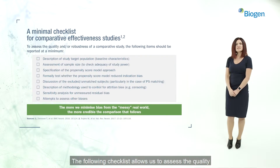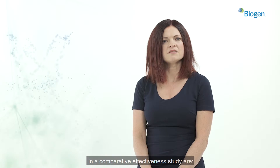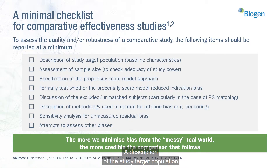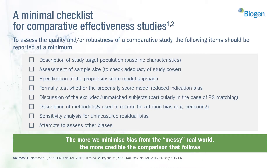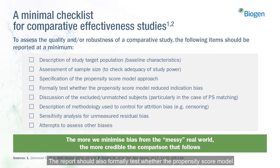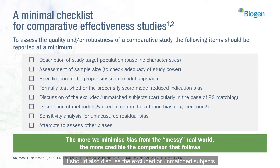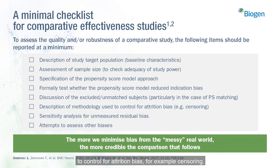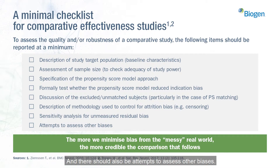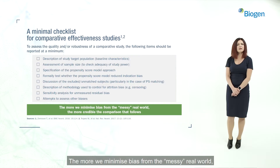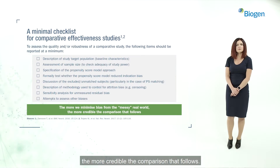The following checklist allows us to assess the quality and robustness of a comparative study. Important topics that should be reported include: a description of the study target population and their baseline characteristics; an assessment of sample size to check adequacy of study powering; specification of the propensity score model approach; formal testing of whether the propensity score model reduced indication bias; discussion of excluded or unmatched subjects, particularly in propensity score matching; a description of methodology used to control for attrition bias, for example censoring; sensitivity analysis for unmeasured residual bias; and attempts to assess other biases. The more we minimise bias from the messy real world, the more credible the comparison that follows.